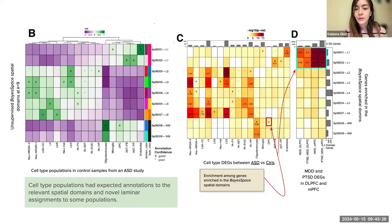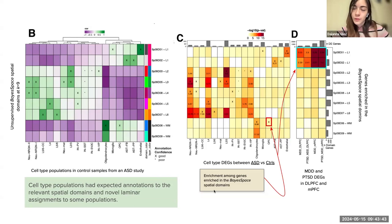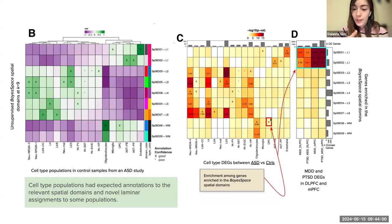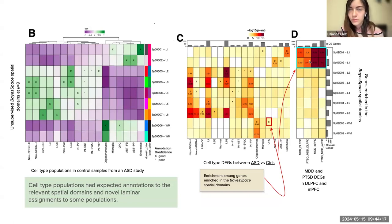Finally, they performed enrichment analysis for differentially expressed genes associated with diseases. In figure C, differentially expressed genes for autism spectrum disorder versus controls — cell-type specific, from another study — were tested for enrichment among genes enriched in the different spatial domains at broad resolution. Significant hits were obtained, and the same approach was applied to major depressive disorder and post-traumatic stress disorder in the DLPFC and medial prefrontal cortex. Some differentially expressed genes were found associated with spatial domains one and two, both mapping to the first histological layer.